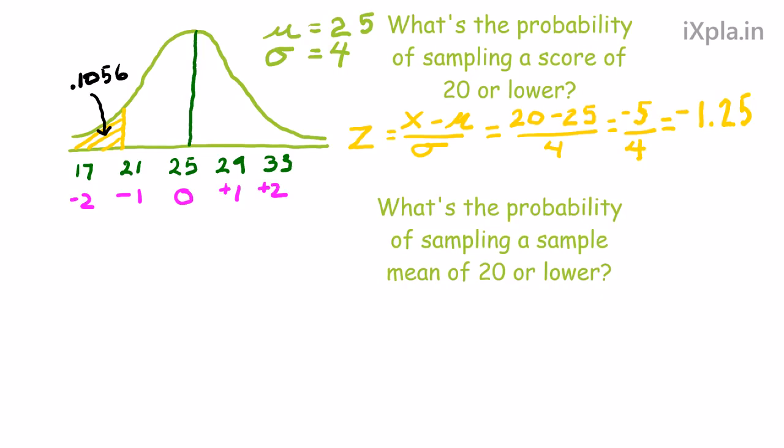And normally, that's going to be given to you in the question. Well, in this case, we're going to use a sample size of 4. So I've got this curve drawn here. Now, this is going to be not a population of scores, but rather a population of sample means. In other words, this is a distribution of sample means.